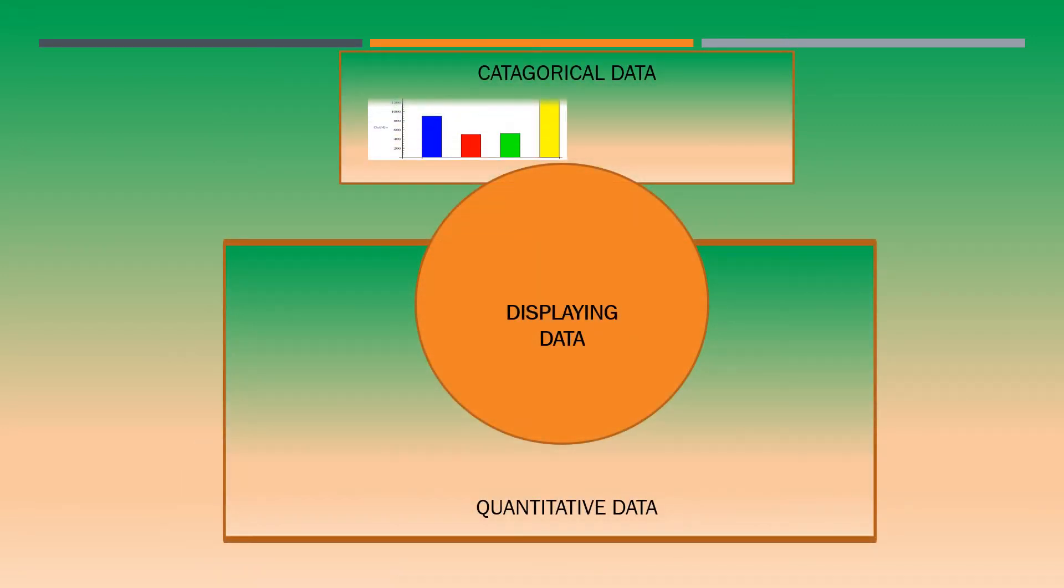When we display the data, they are divided into two: one is categorical data, the other one is quantitative data. The variables can be divided into two categories, categorical or quantitative.